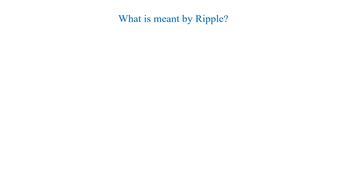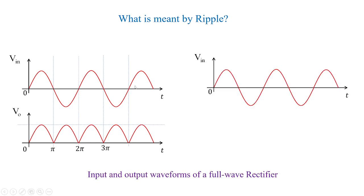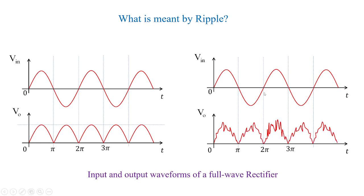What is actually meant by ripple? Consider a full wave rectifier output where you have input and output waveform voltages. Ripple means if you have an input like this and you plot the output, the output behaves in this fashion — this kind of behavior of a waveform is regarded as ripples. The ripple factor indicates that there should not be any ripple in the waveform; your output waveform should always be ripple free. That is the importance of the ripple concept, and we are going to see the derivation now.